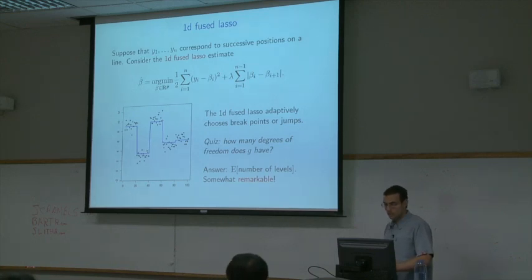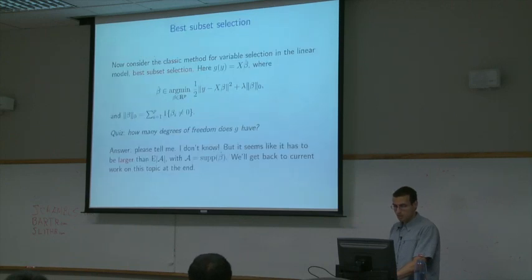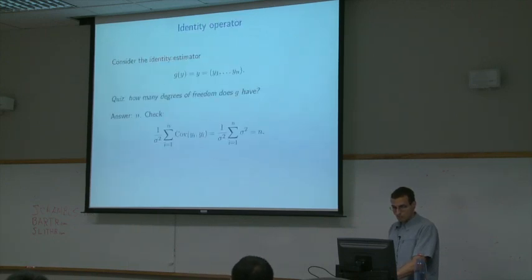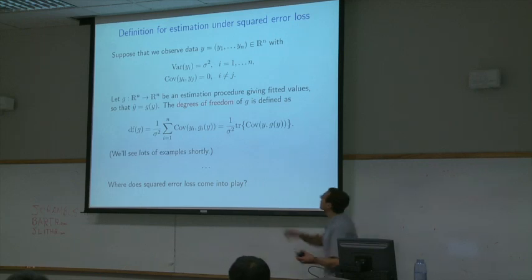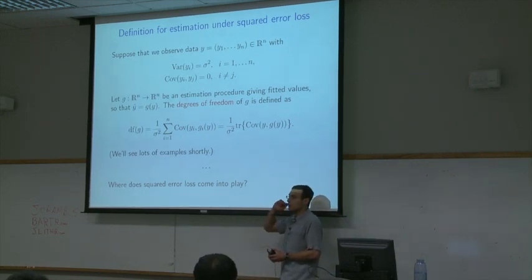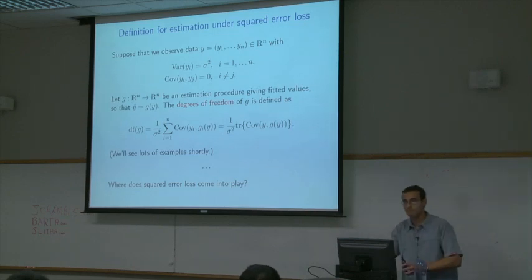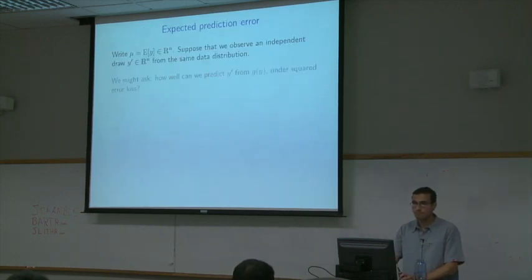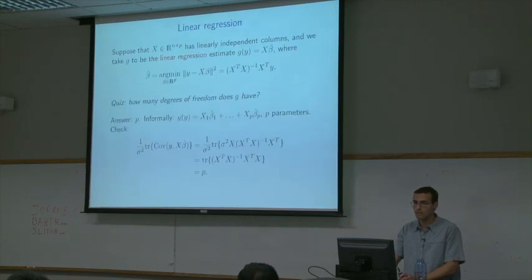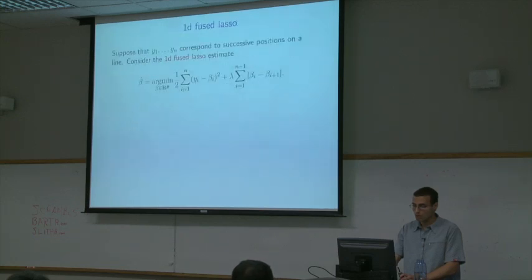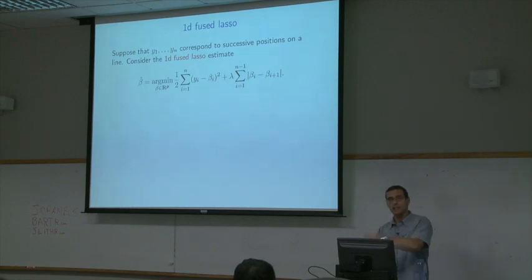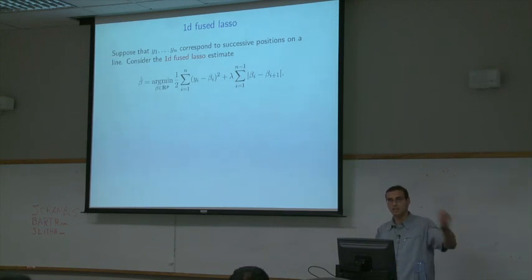The expectation is over Y — we assumed Y came from a distribution with moment conditions, and we take expectation over Y with X fixed. For random X, it's still true because it holds for any fixed X.